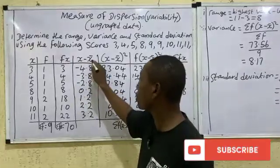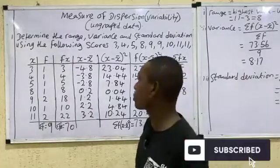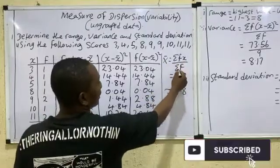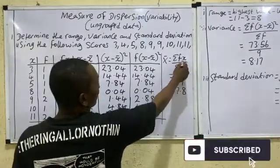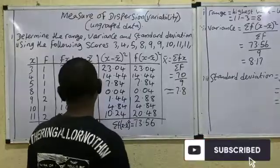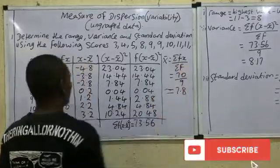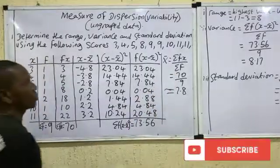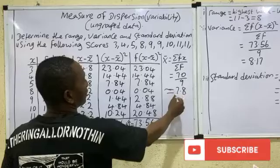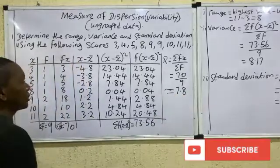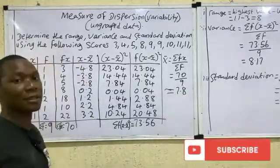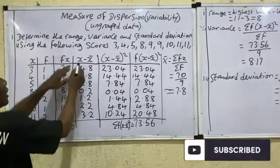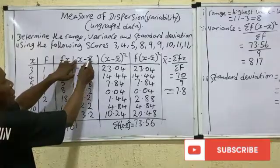Now we need to find the mean first before we can compute x minus mean. The mean is calculated as Σfx divided by Σf. Σfx is 70 and Σf is 9, so 70 divided by 9 gives us a mean of 7.8.